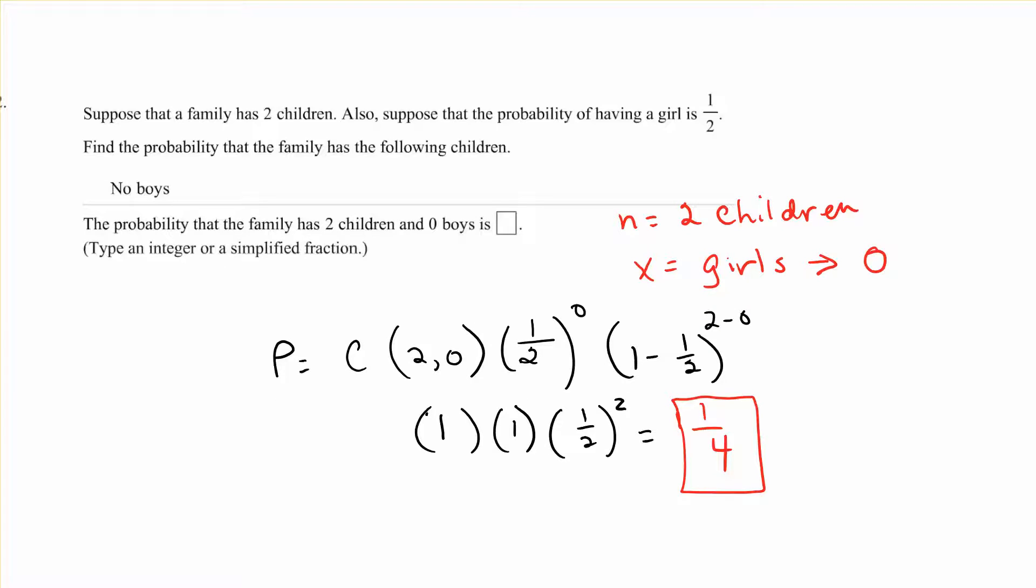Suppose that a family has 2 children and suppose the probability of having a girl is 1 half. Find the probability that the family has the following: no boys. So N is 2, that's the 2 children. X is the girls and we're saying 0, we want 0. So 2 taken 0 at a time where X is the girls, times 1 half which is the girls, times 1 minus 1 half to the 2 minus 0. You go through here and you get 1 fourth.